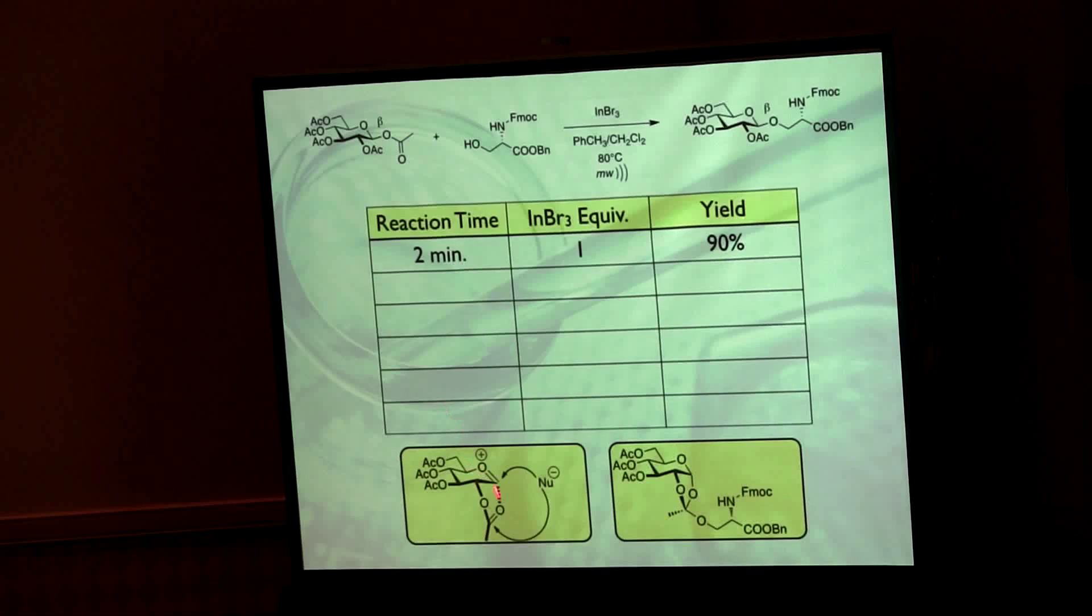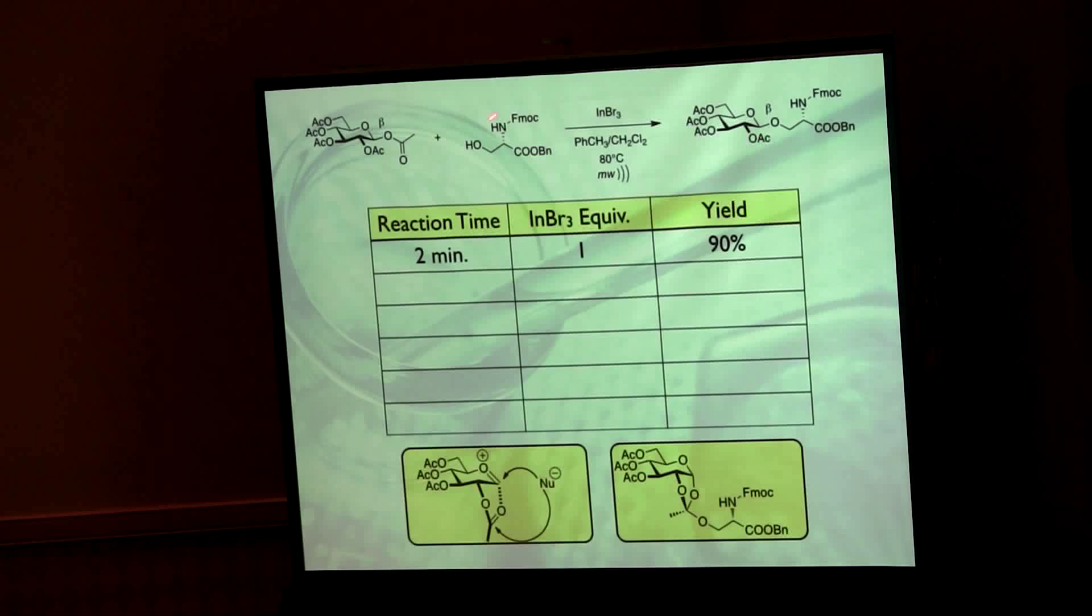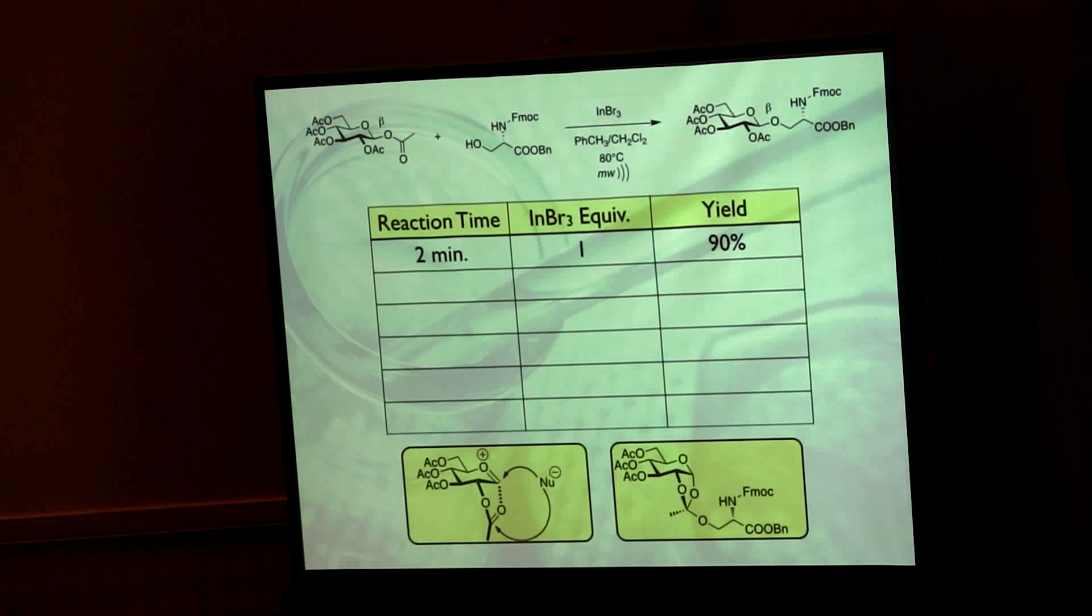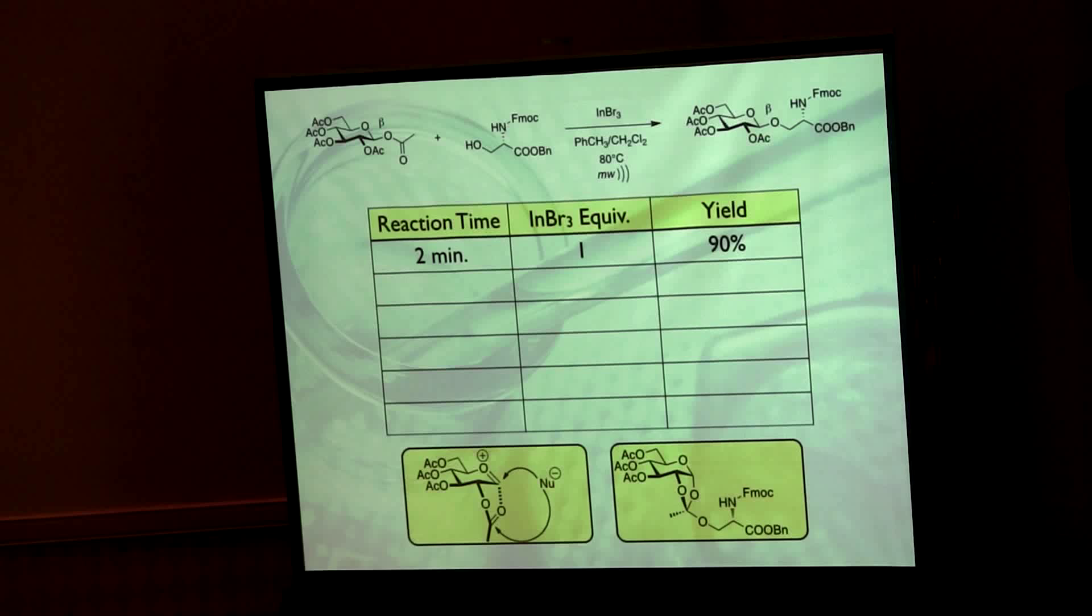So now we've got our beta-peracetate here, and I think, you know, this suggests that the beta is going to be better than alpha. We've got FMOC protection here, and then the easily cleavable benzyl ester, a mixture of methylene chloride and toluene as a solvent, indium tribromide. We get the desired material. Now we're only one step away—we just have to cleave that benzyl group to get to something we can put into a peptide synthesizer.